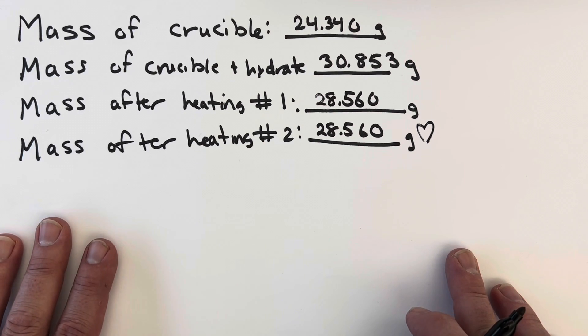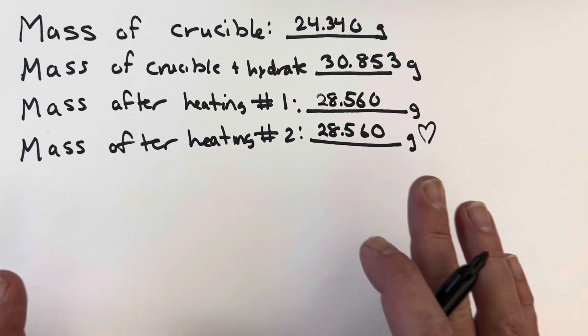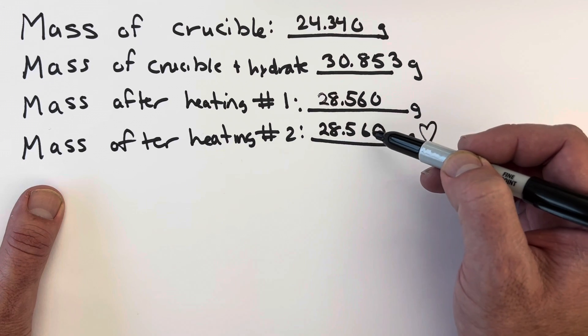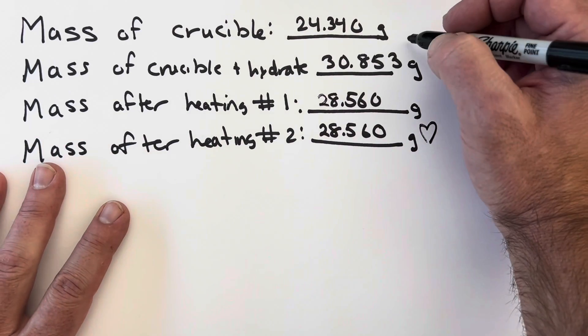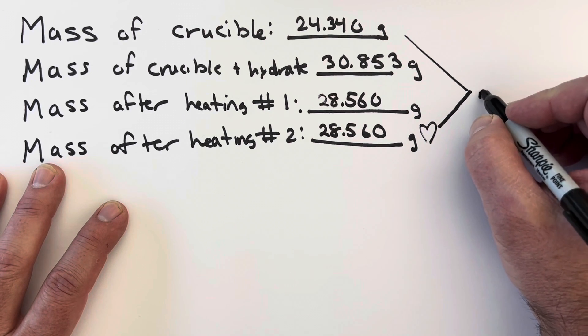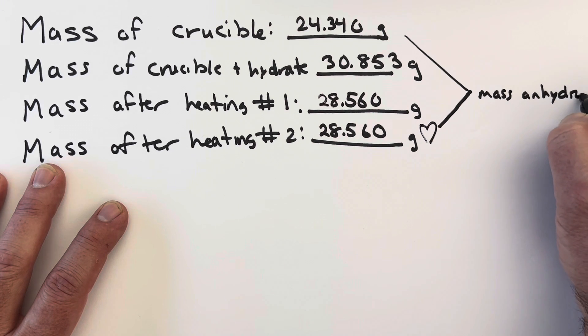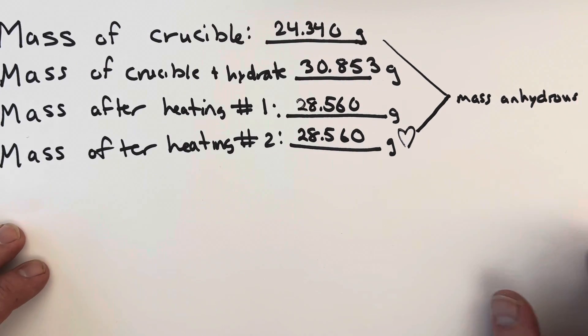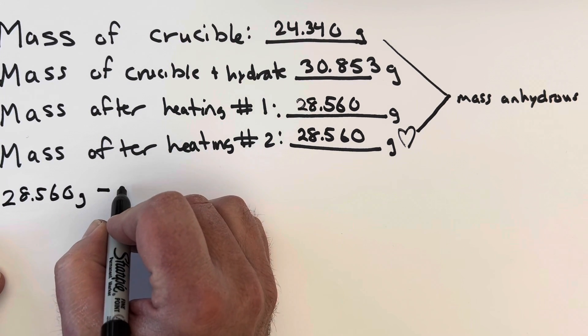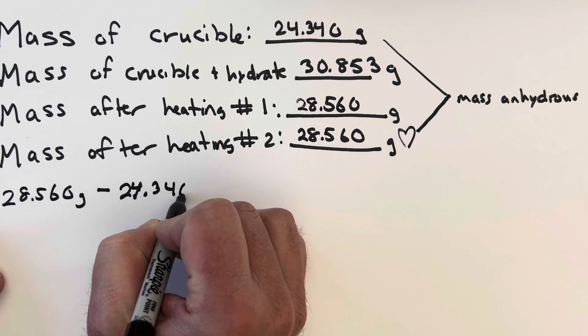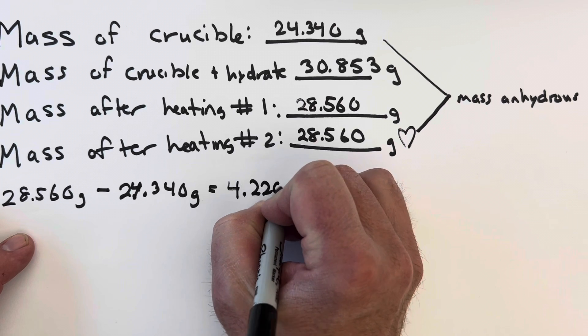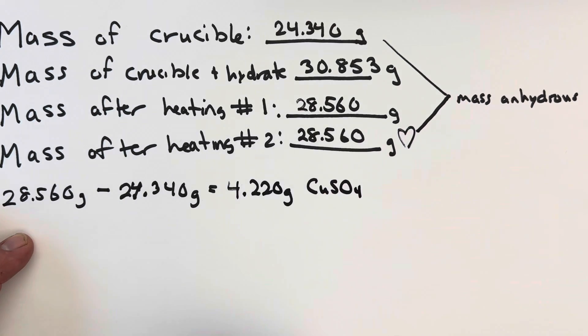A lot of people have trouble looking at a data table like this and choosing the correct values. To get the mass of the anhydrous stuff that's left at the end, this mass includes the crucible and the anhydrous. We want to subtract out the crucible, so you should take your final mass and your initial mass and subtract those to get the mass of the anhydrous. Let's go ahead and do that: 28.560 grams minus 24.340 grams, and that gives me 4.220 grams of copper sulfate. You always want to know the formula of the anhydrous part that you're working with.